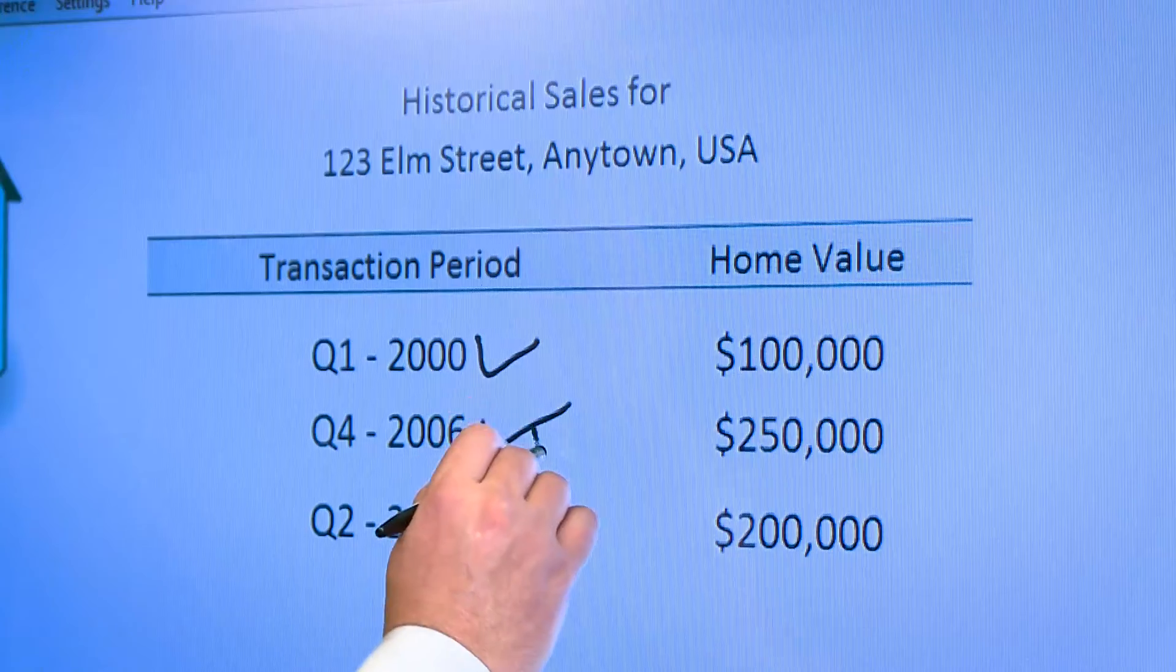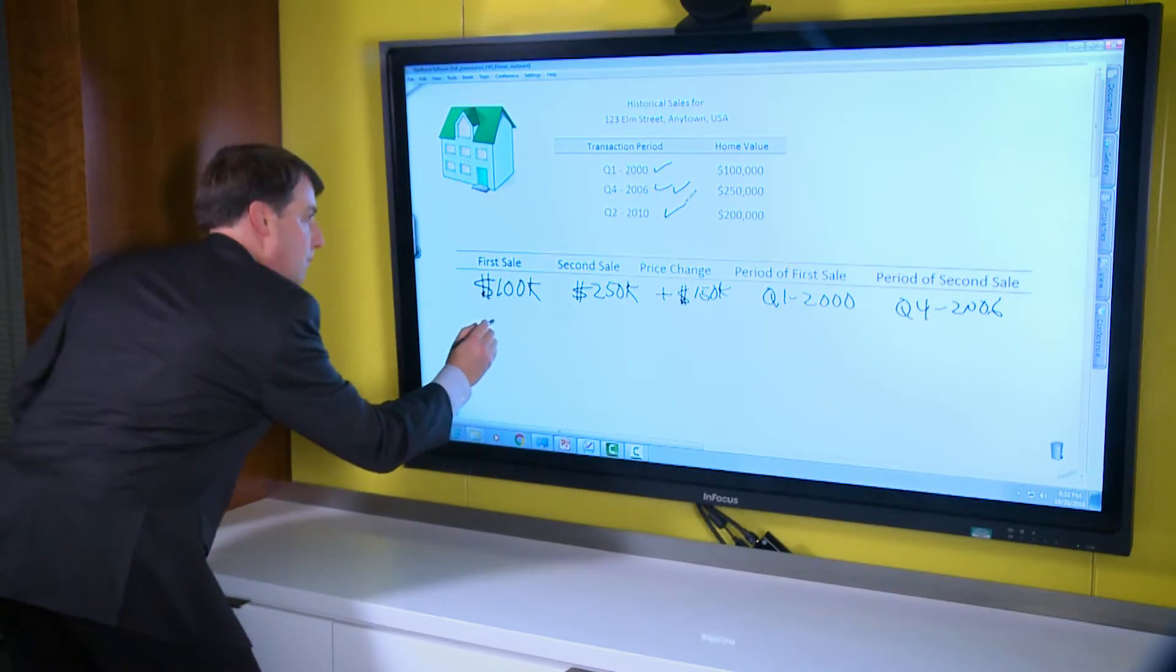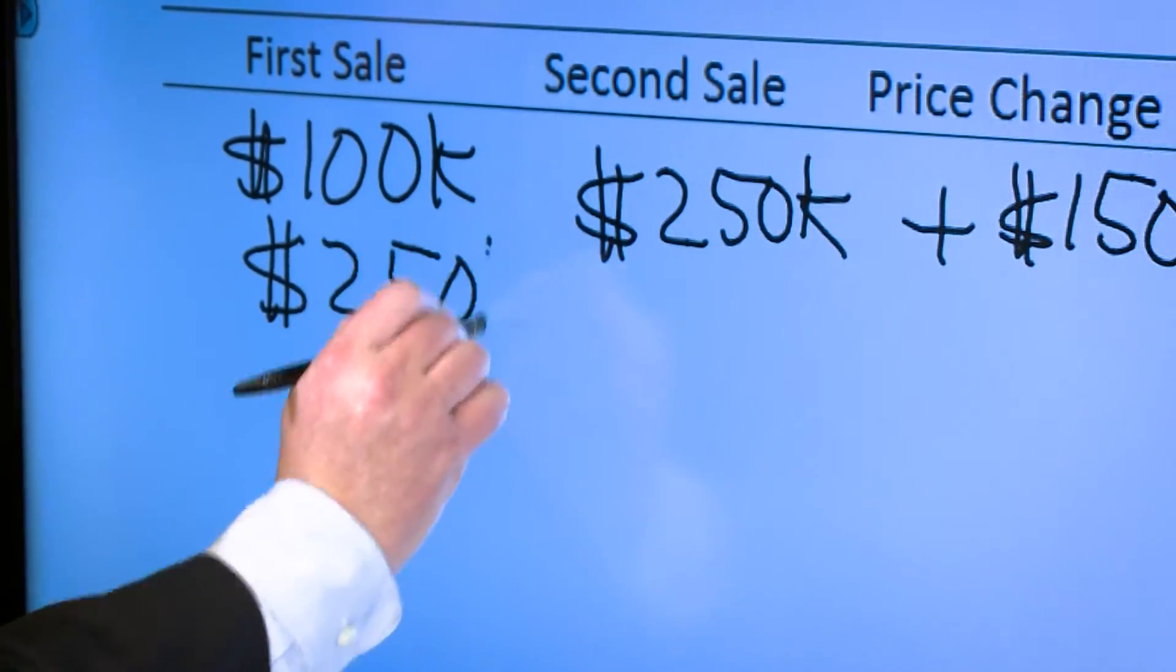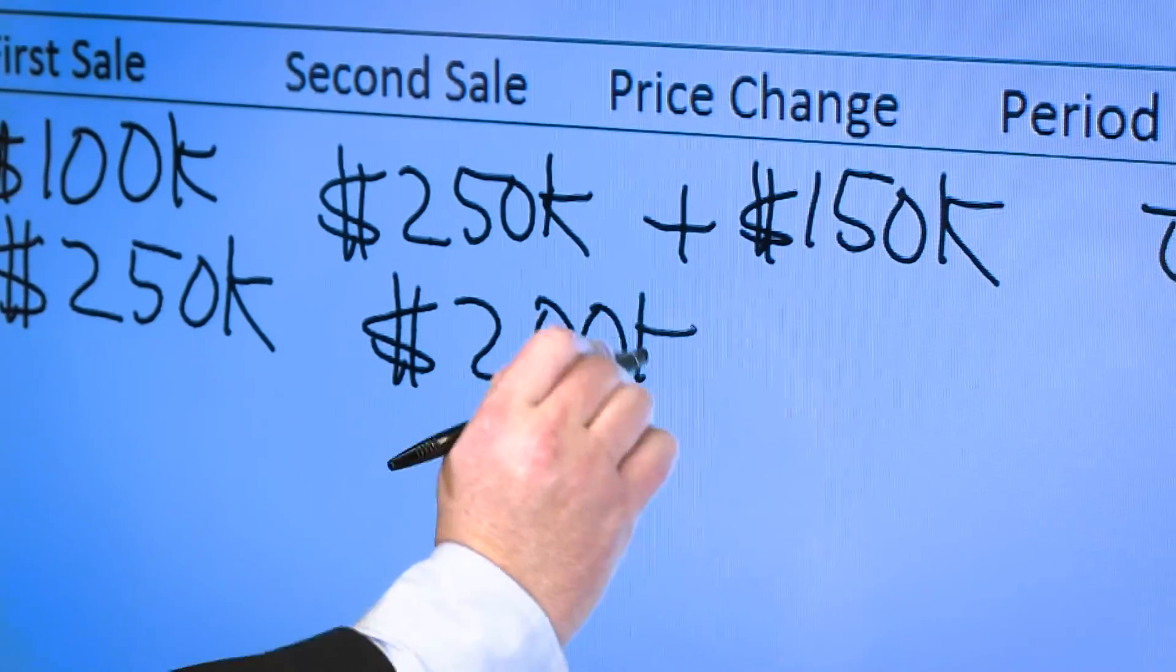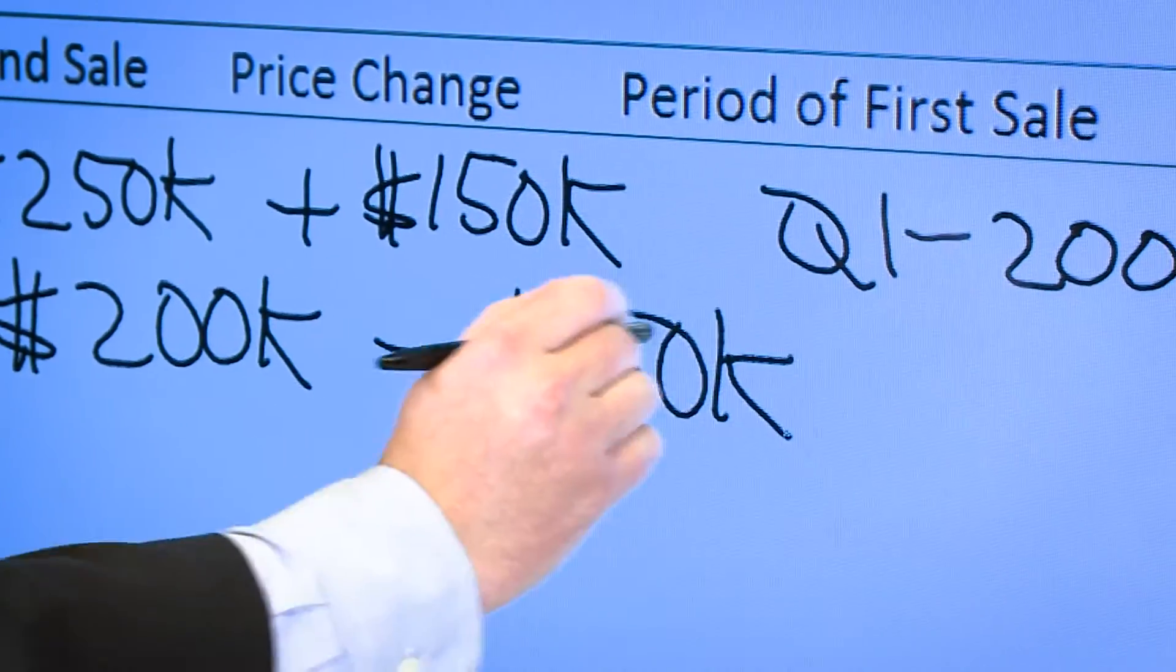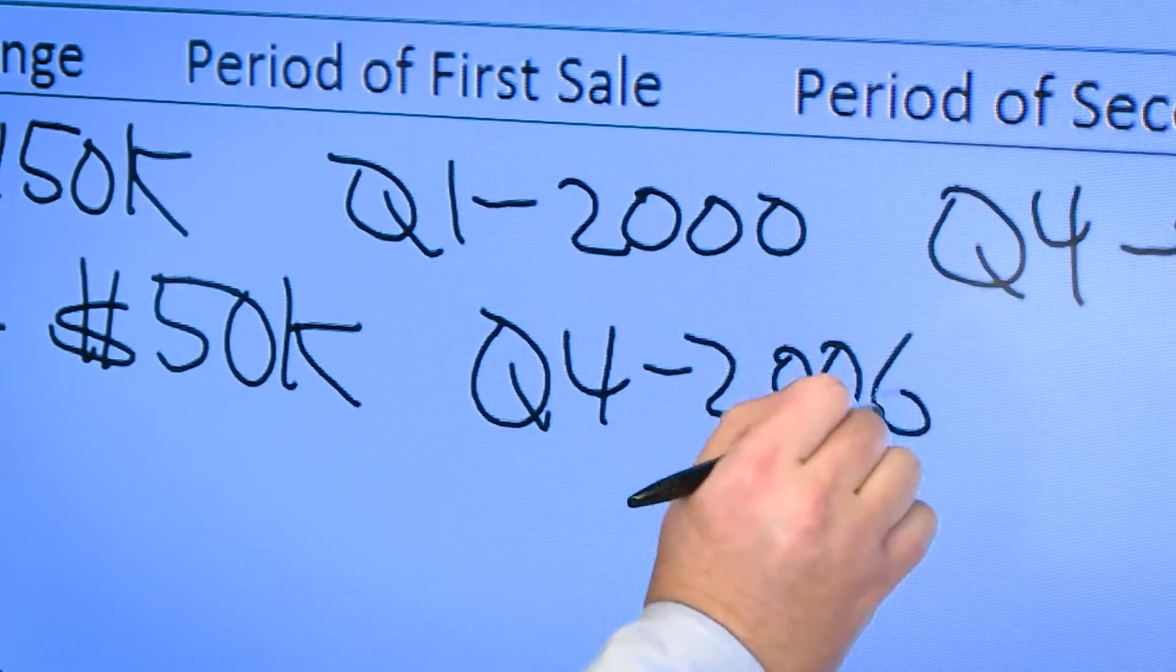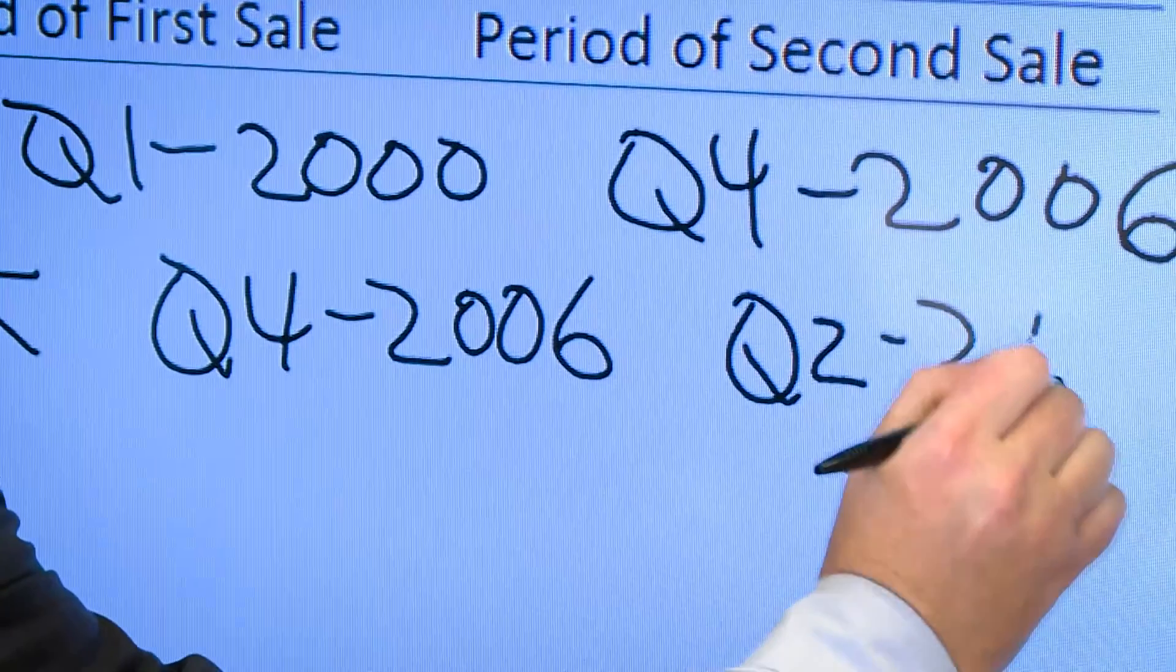Then the second pairing would show the price change between the second and third transaction. In this case, the first sale was for $250,000. The second sale was for $200,000, which meant that there was a price decline of $50,000. The first of these two transactions was the fourth quarter of 2006. And the second was in the second quarter of 2010.